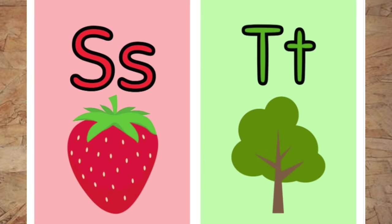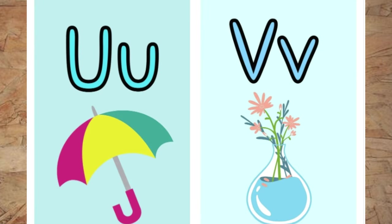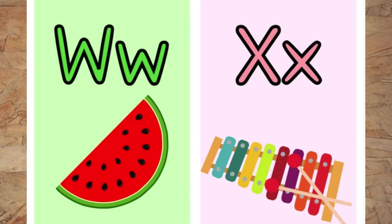S is for strawberry. T is for tree. U is for umbrella. V is for vessel. W is for watermelon.